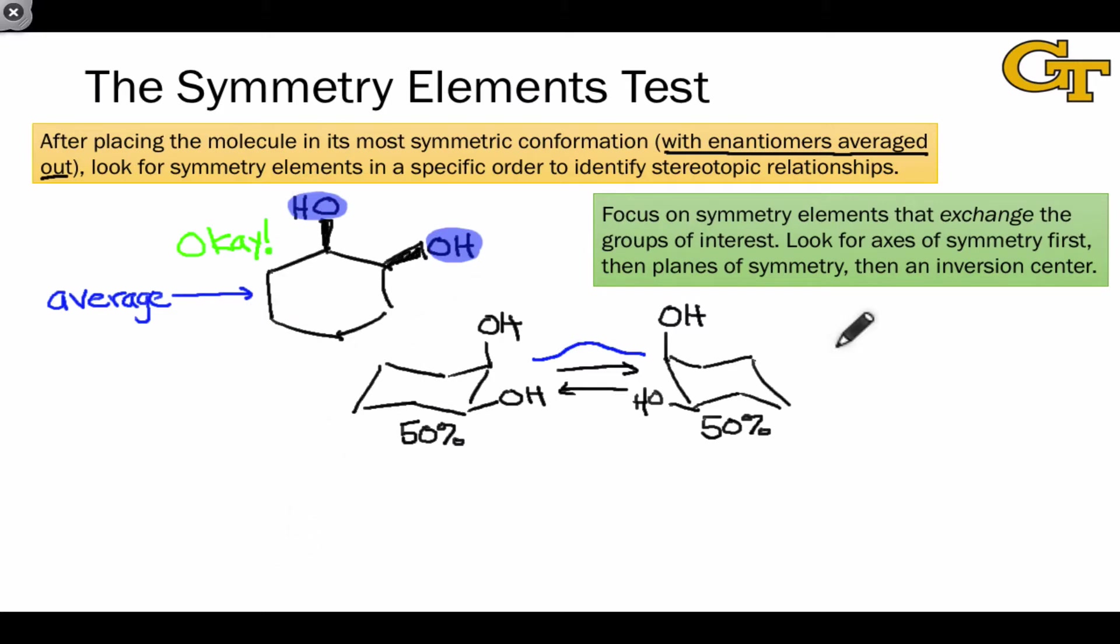Thinking about the average conformation will also often lead to the most symmetric situation. Consider, for example, the molecule shown here, which lacks a plane of symmetry as drawn. However, we can rotate around the central carbon-carbon bond so that one of the conformations does have a plane of symmetry. If we rotate so that the carbon-oxygen bonds are aligned, now the molecule does have a plane of symmetry running right through the middle of it.